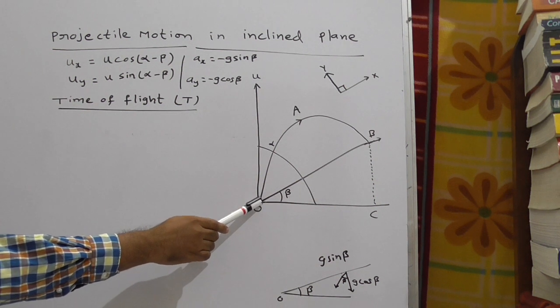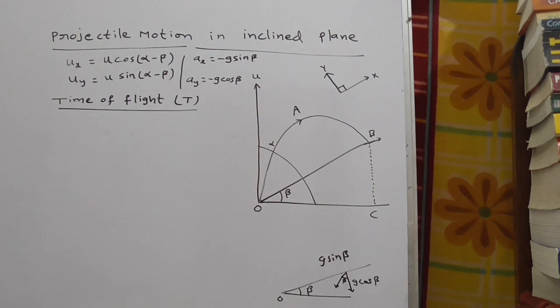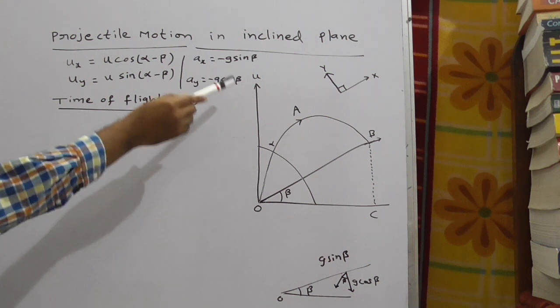A particle thrown from here in projectile motion, that is initial velocity.